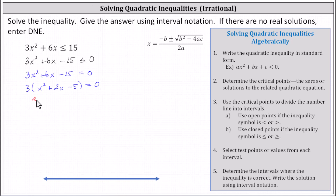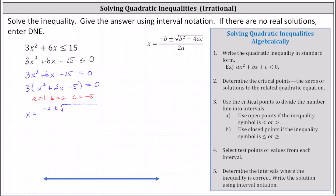We'll notice a is equal to one, b is equal to two, and c is equal to negative five, which gives us x equals negative b — that is negative two — plus or minus the square root of b squared, which is two squared, minus four times a times c, which is minus four times one times negative five, all divided by two times a, which is two times one.